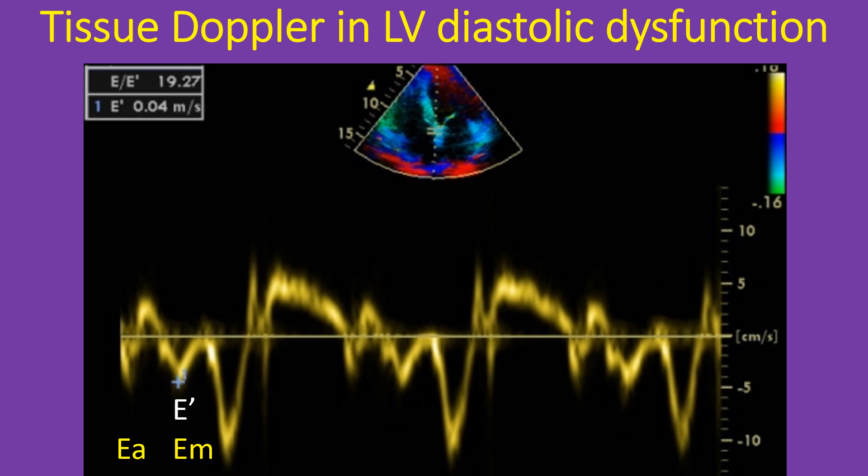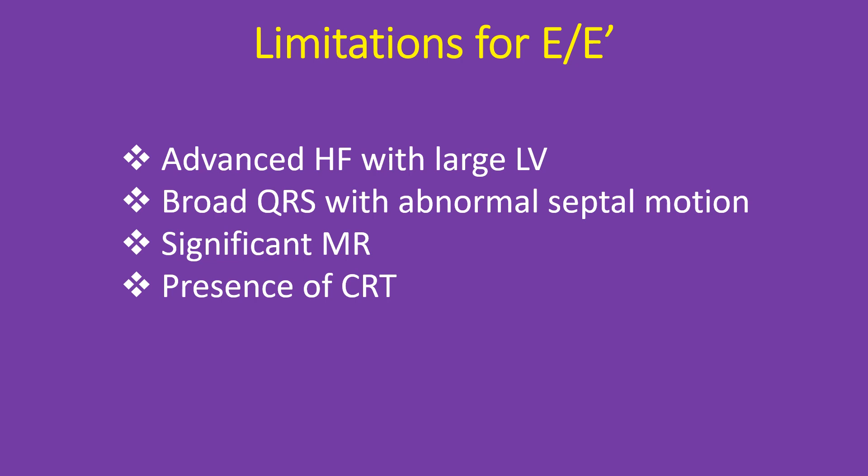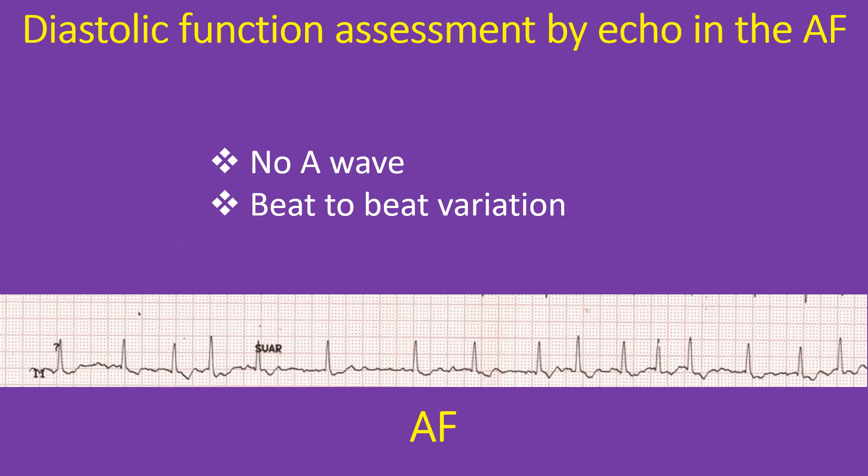Measurement of E prime is useful in differentiating pseudo-normalization in the mitral inflow from the normal pattern. There are also limitations for E by E prime in the assessment of LV diastolic dysfunction. One situation is decompensated advanced systolic heart failure with a large left ventricle. Broad QRS with abnormal septal motion, significant mitral regurgitation, and presence of cardiac resynchronization therapy are all confounding factors. Usually, LV diastolic dysfunction assessment by echo relies on mitral inflow velocity measurement with demonstration of E by A reversal as evidence of diastolic dysfunction.